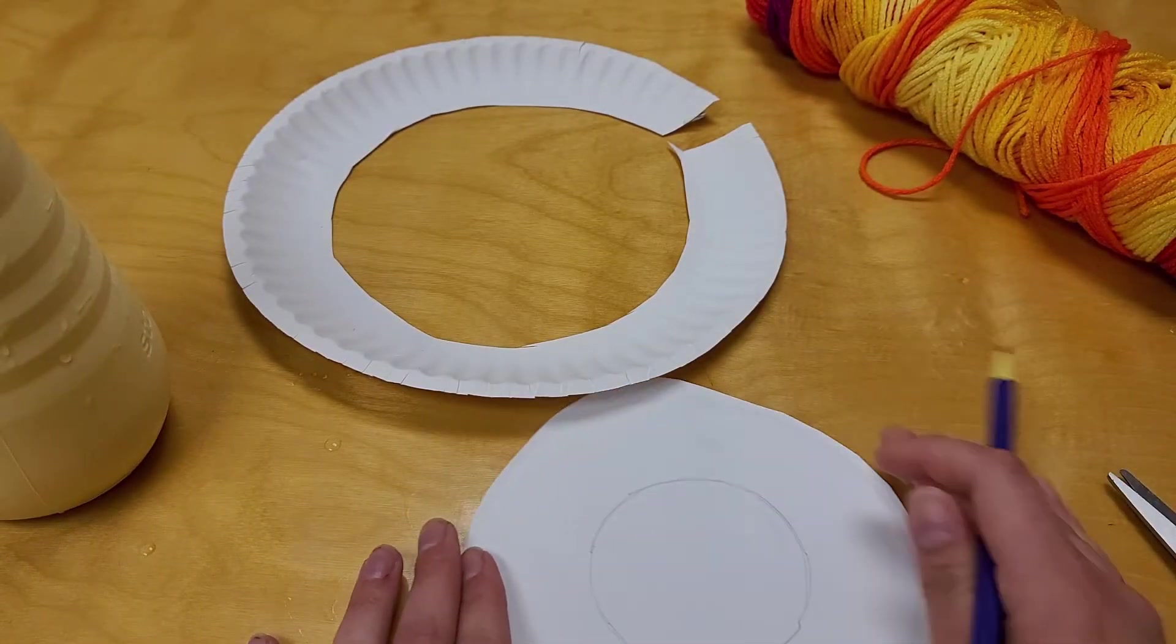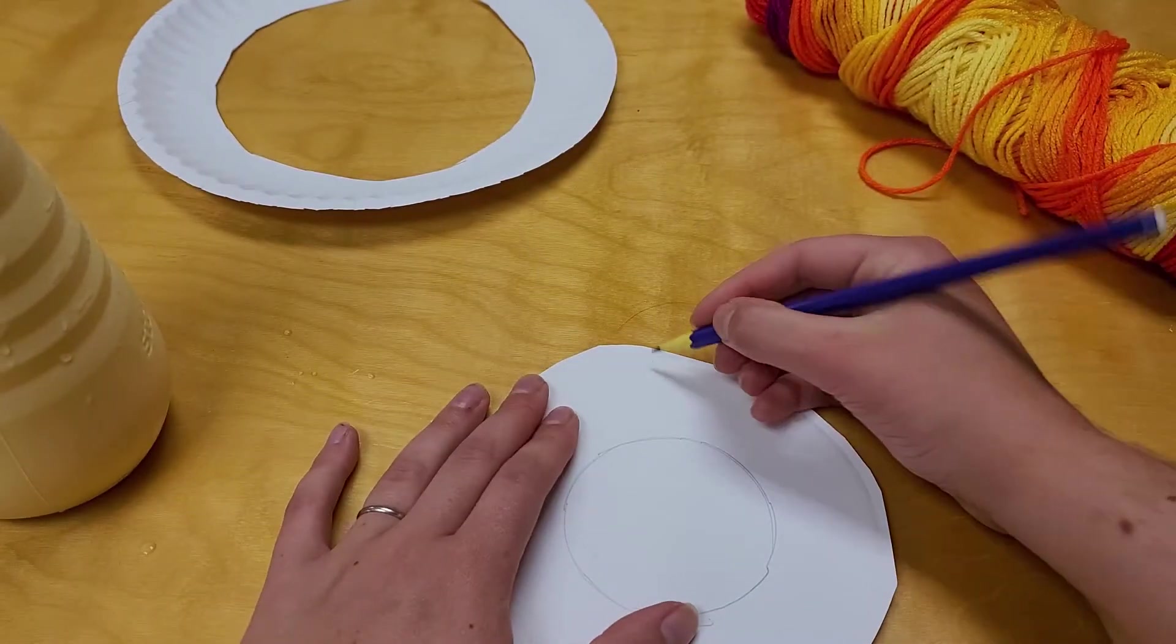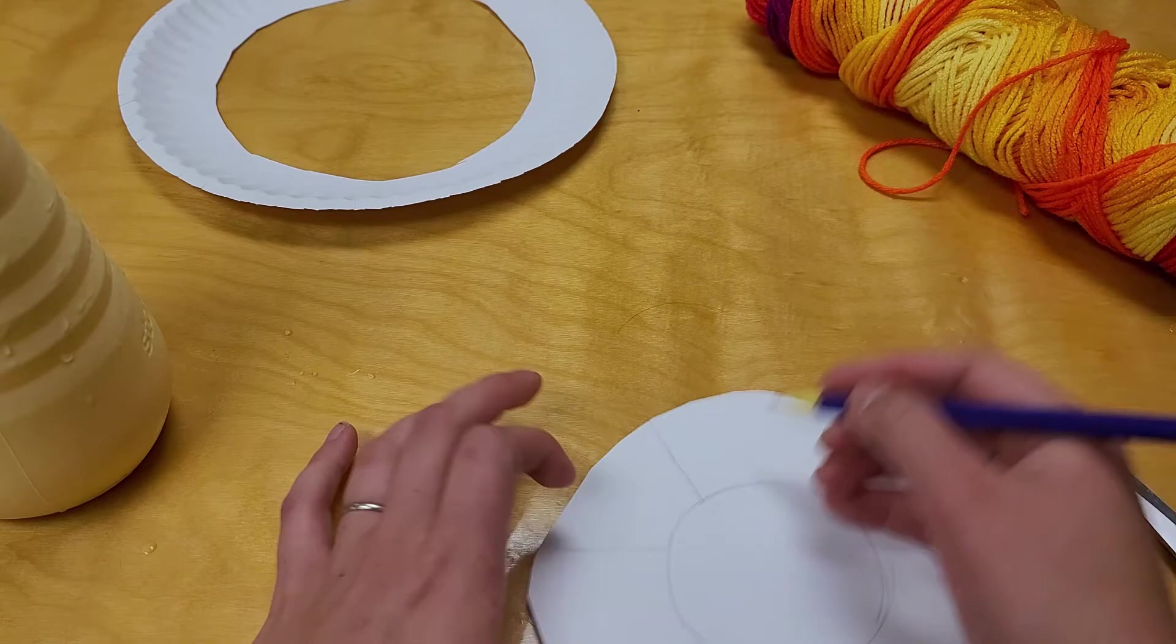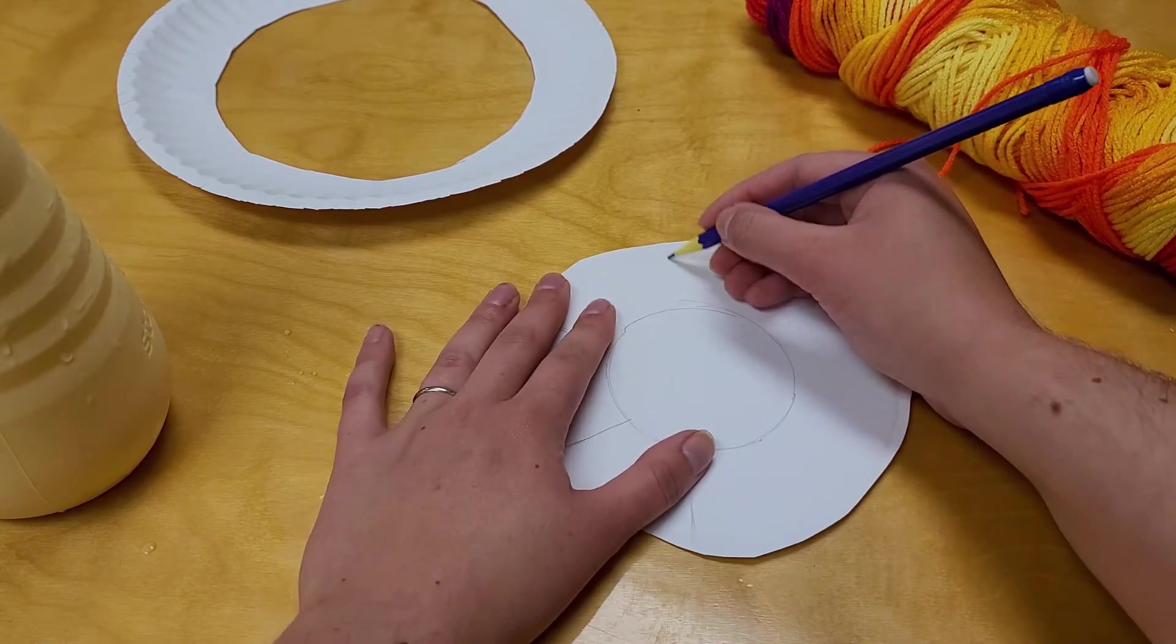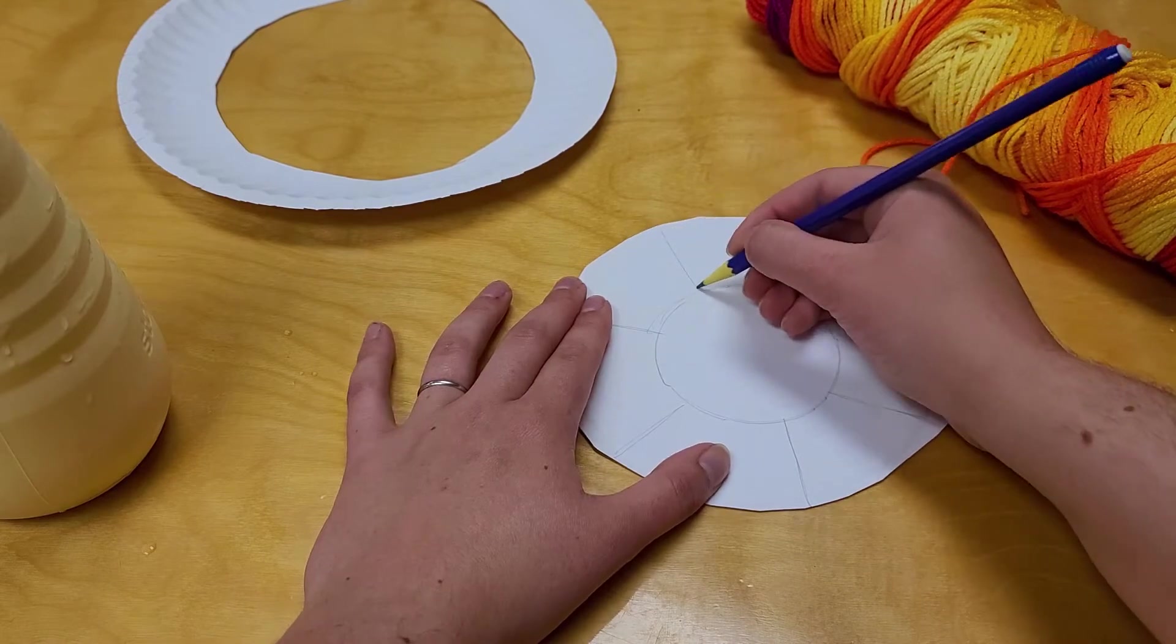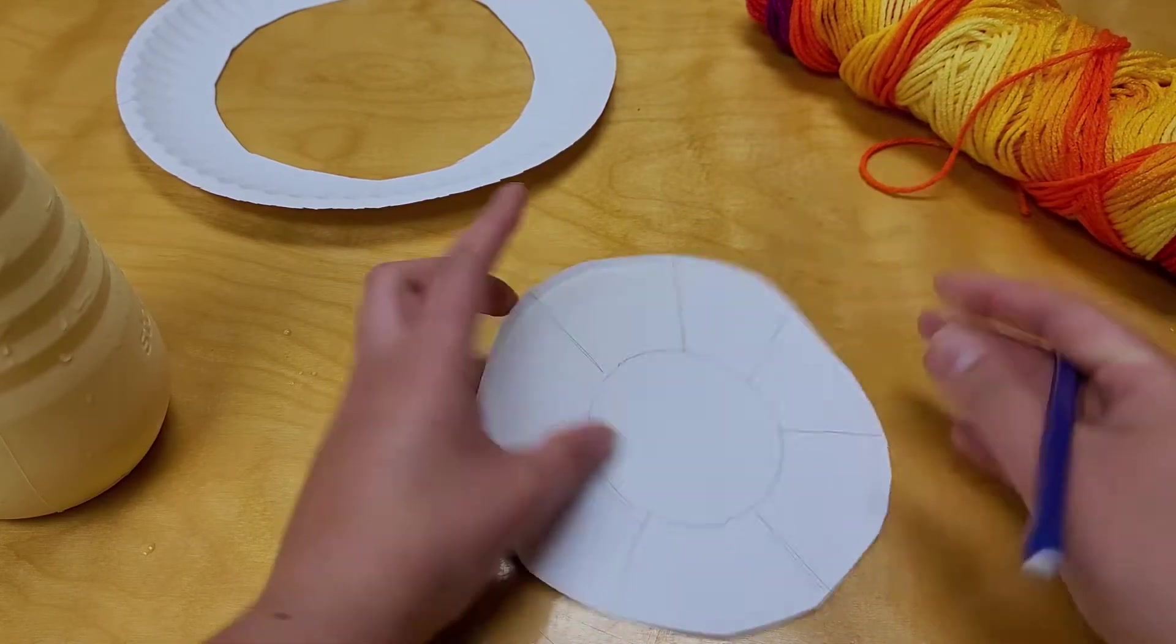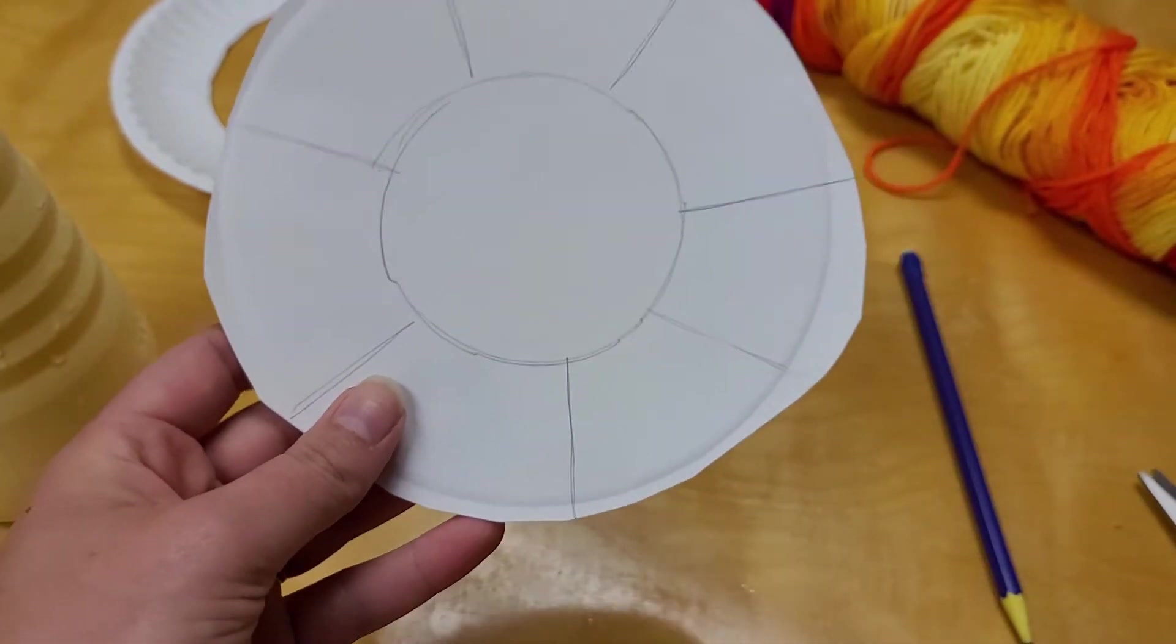The next thing you're going to do is draw a bunch of lines to act as spokes, an odd amount. So one, two, three, four, five, six, seven. If you do an even amount, you're going to have a weird-looking basket.